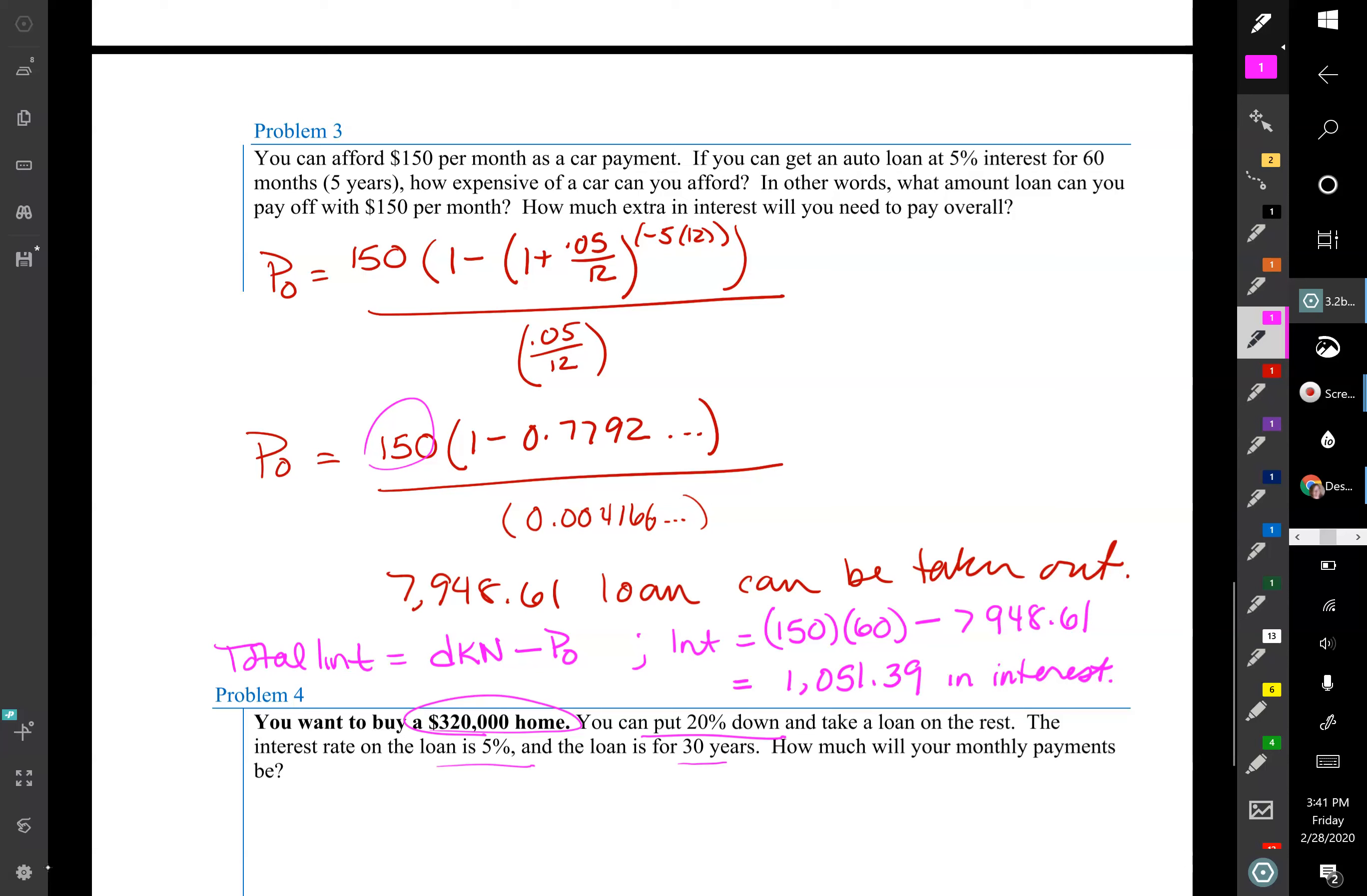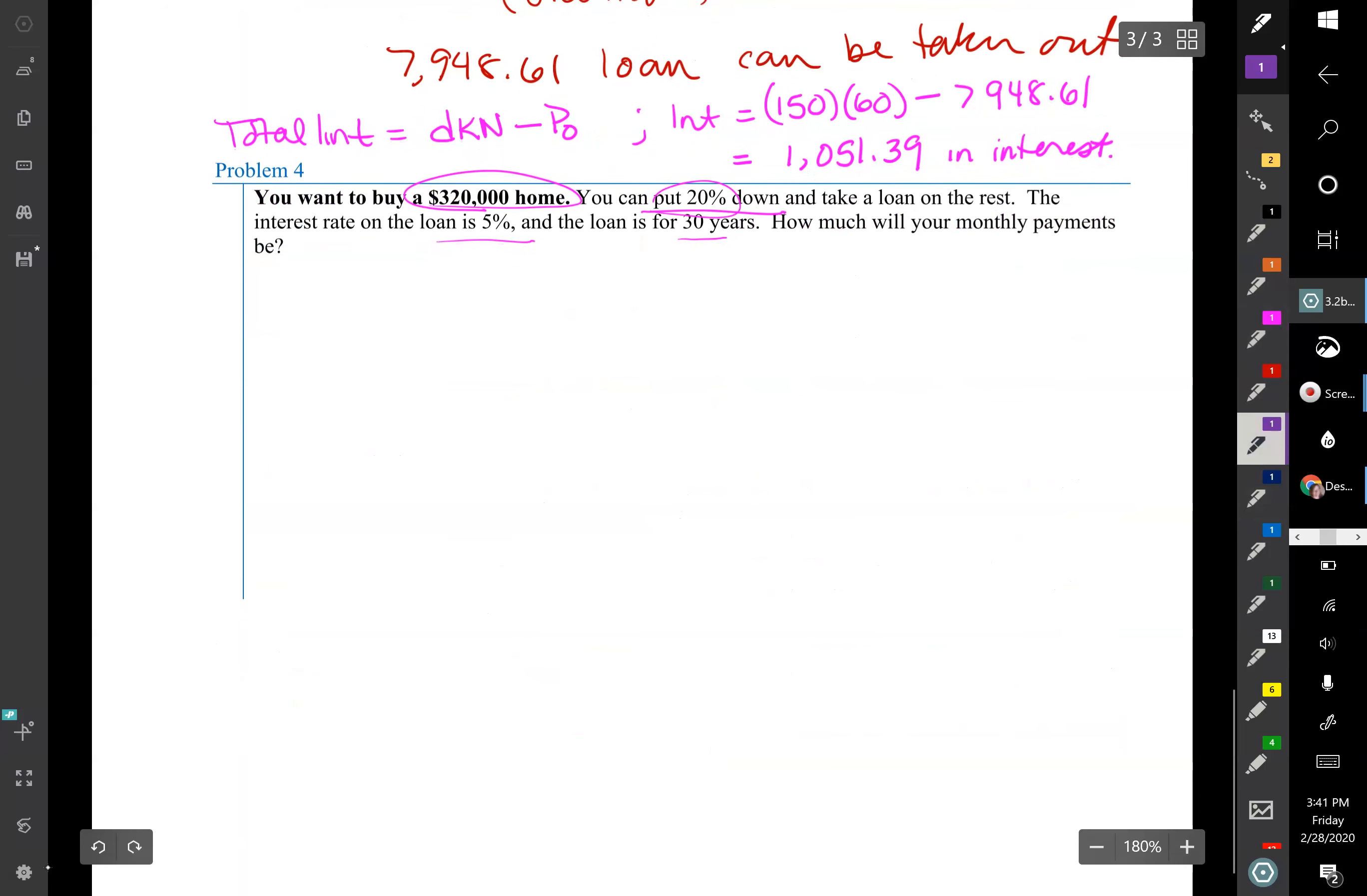So the first step that you need to do is to subtract the 20% off of this, or another way of thinking of it is you're taking a loan out on only 80% will be remaining because you're paying 20% in cash to the bank. So figure that out first. 0.8 times $320,000, we would get let's push this all up $256,000.